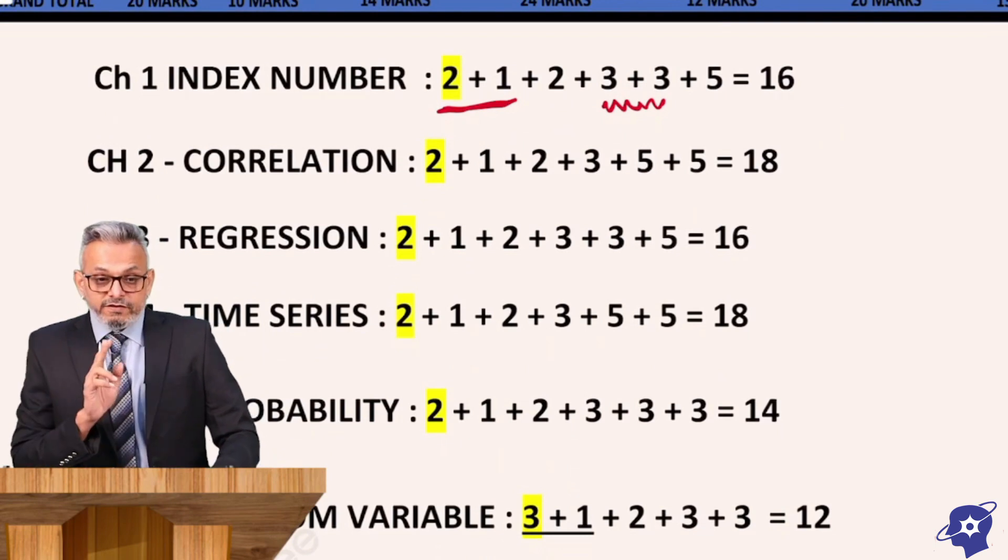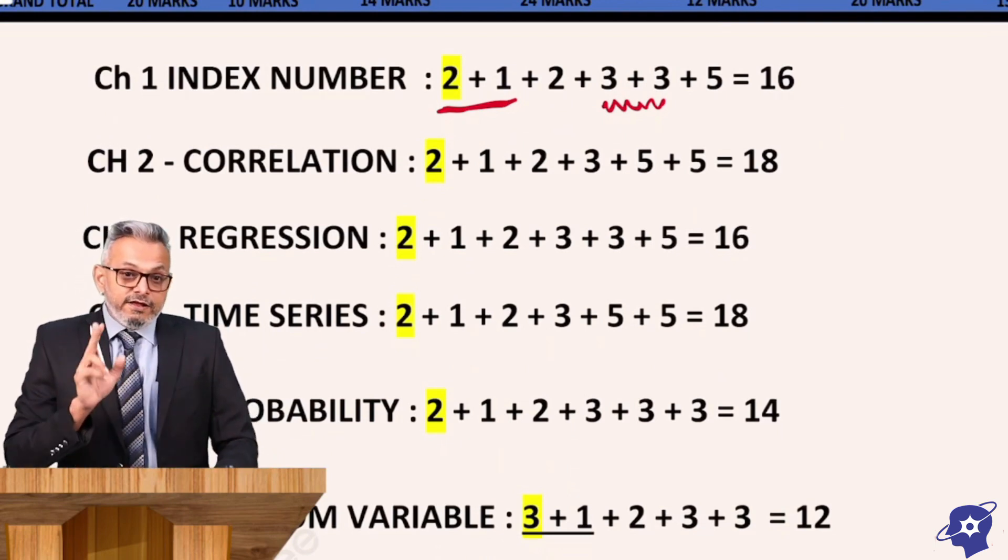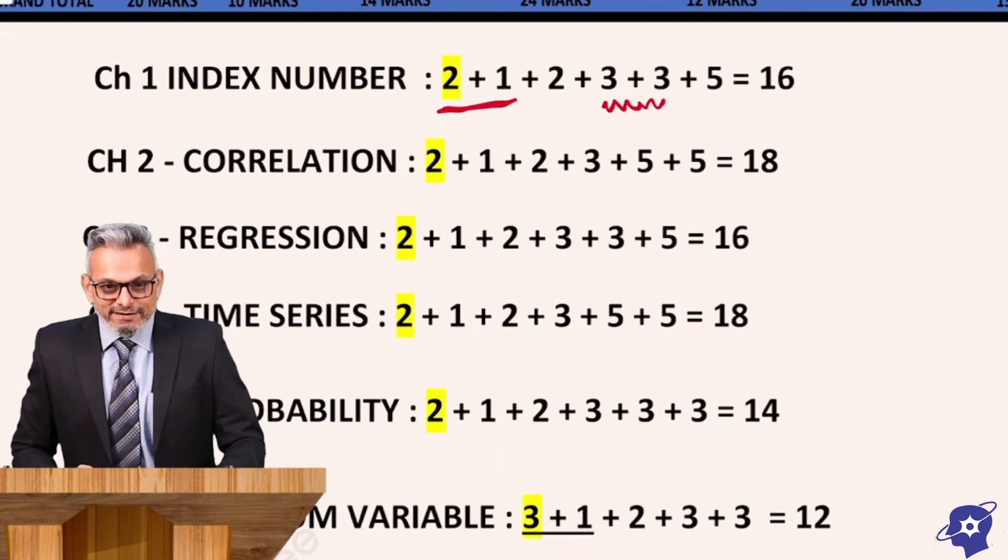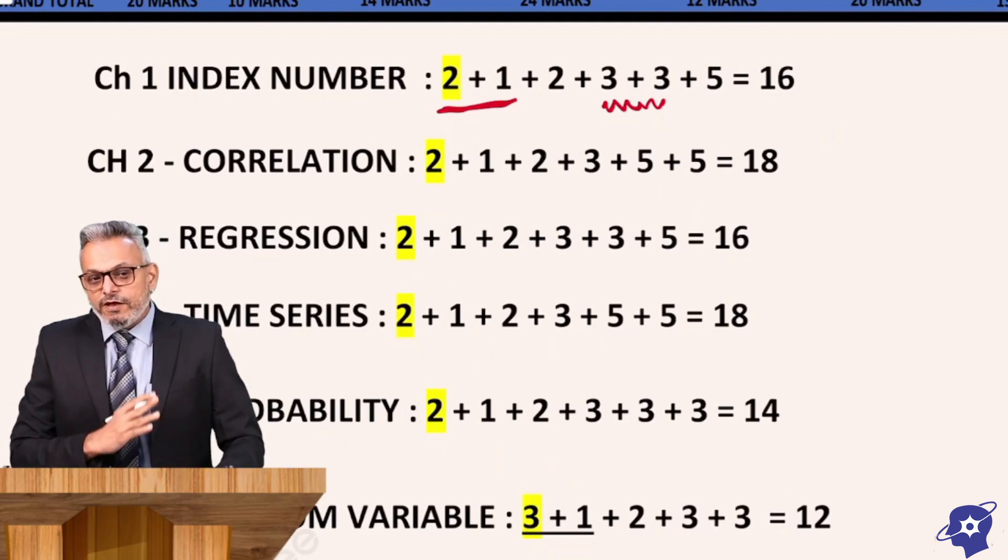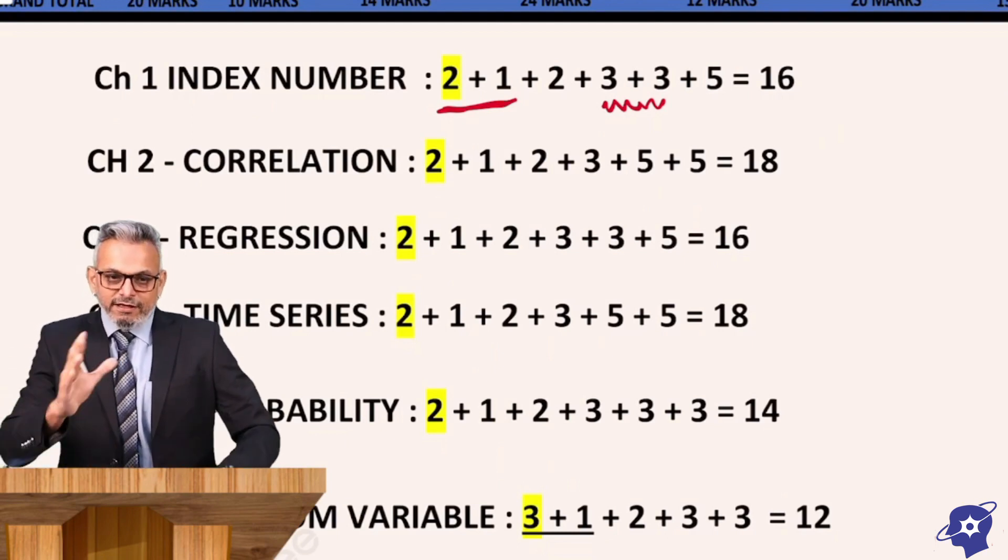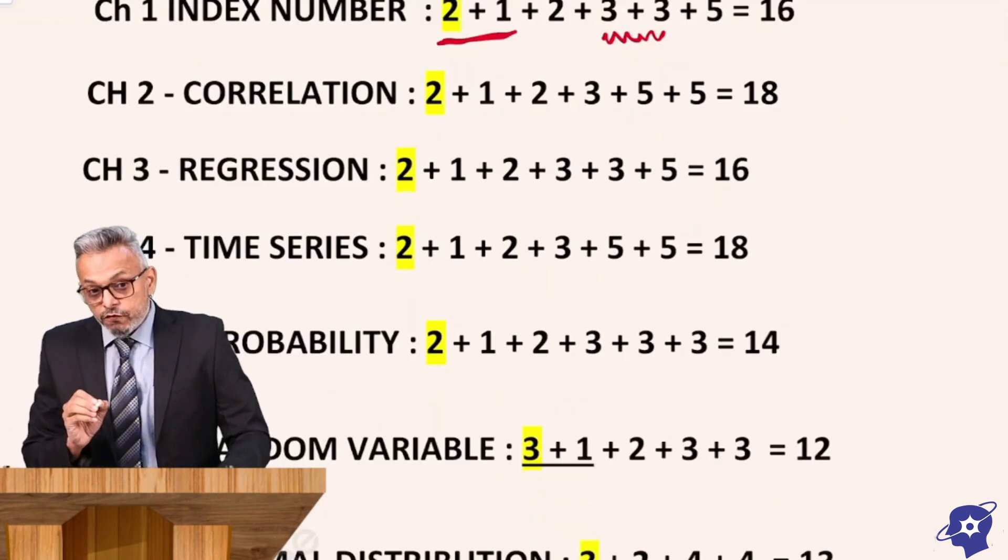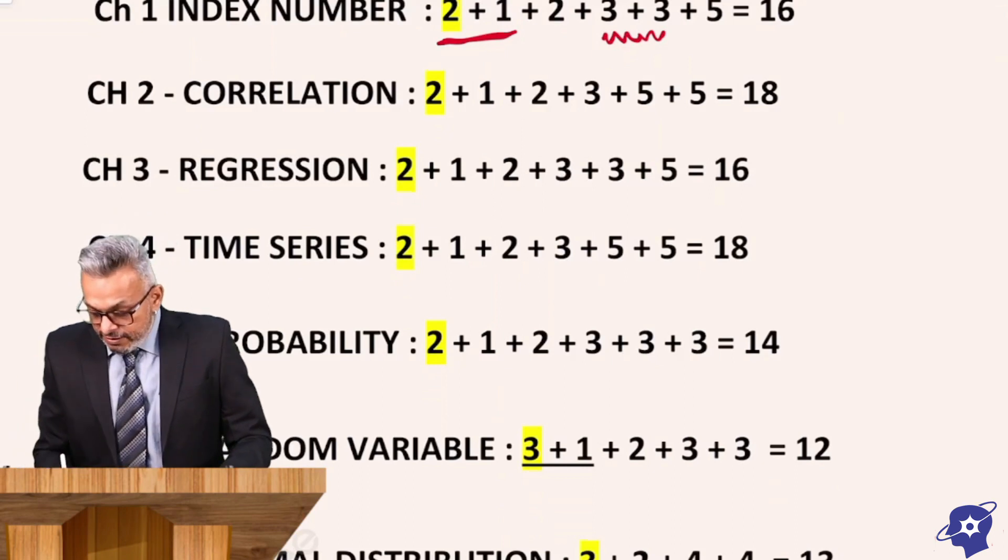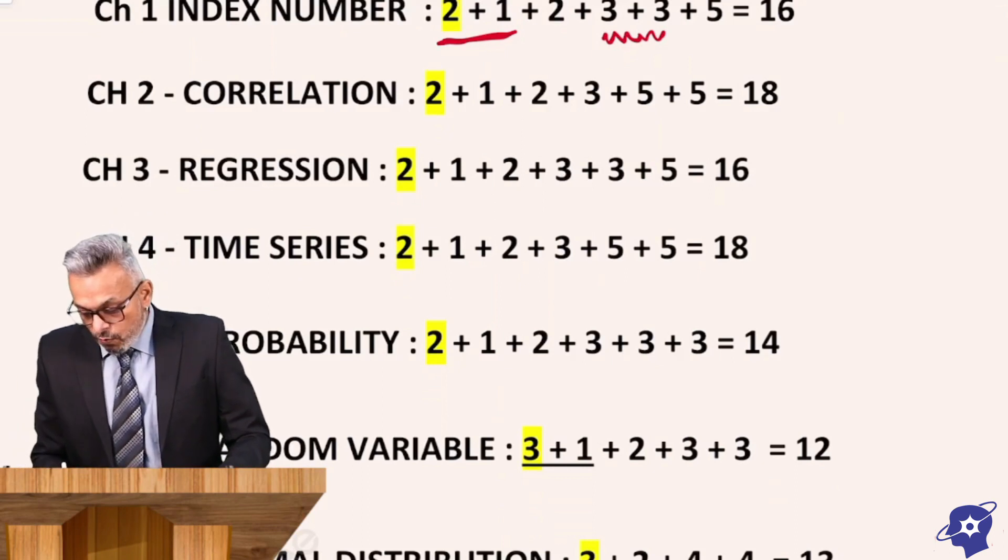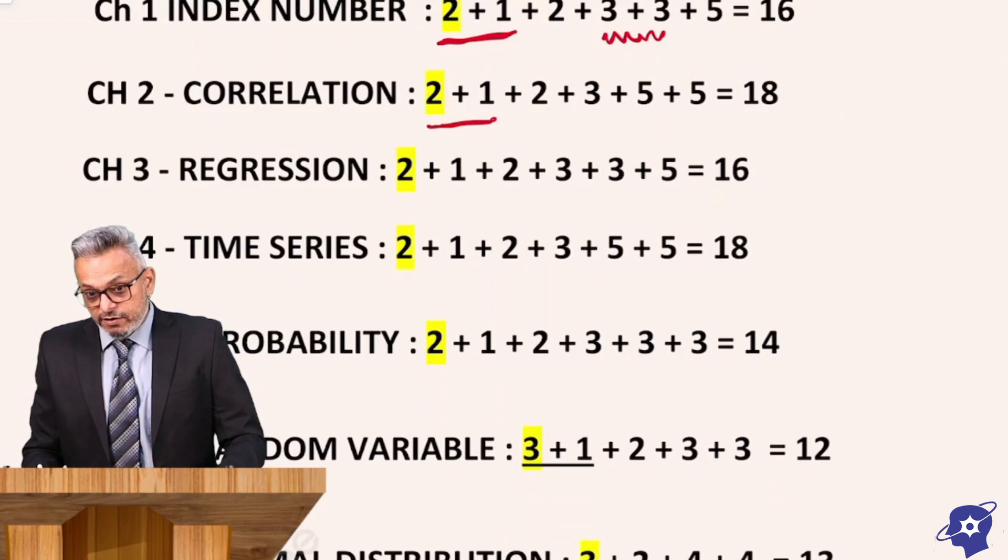We go to chapter number 2. Chapter number 2 and 3 are both connected. Chapter number 2 is Linear Correlation. Now, just for the sake of making it easy, we don't say linear correlation, we say only correlation. In the chapter correlation, again 2 marks MCQ plus 1 one liner.